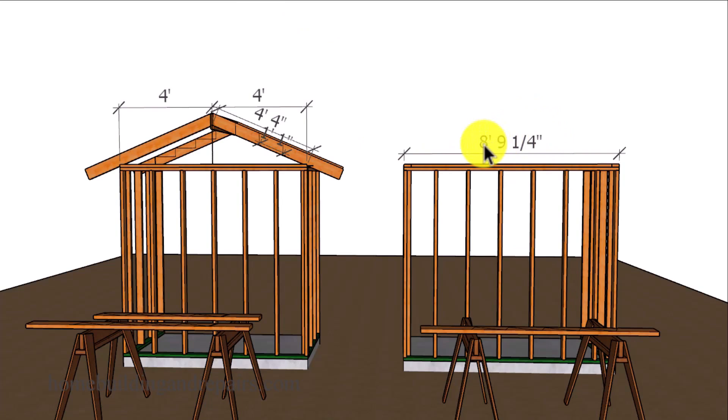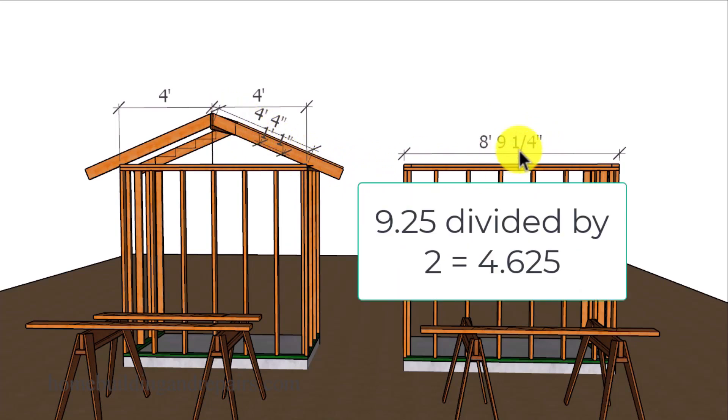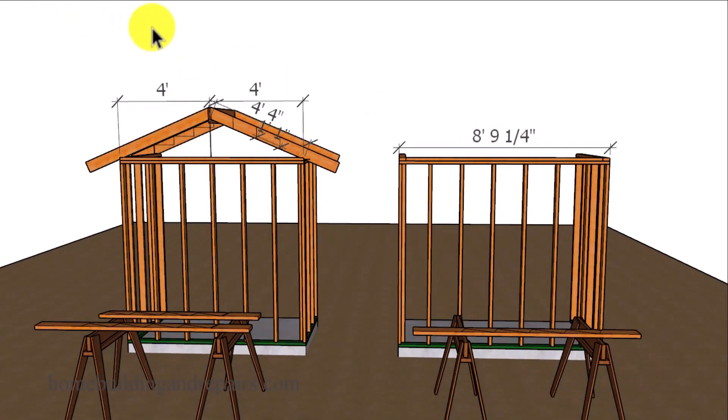We're simply going to take this measurement here and divide it by two, or take the nine and a quarter measurement and divide that by two because we're still going to be working with our four one foot increments. If we divide this in half we're going to get four and five eighths inches or four point six two five as a decimal. We will simply repeat the process.